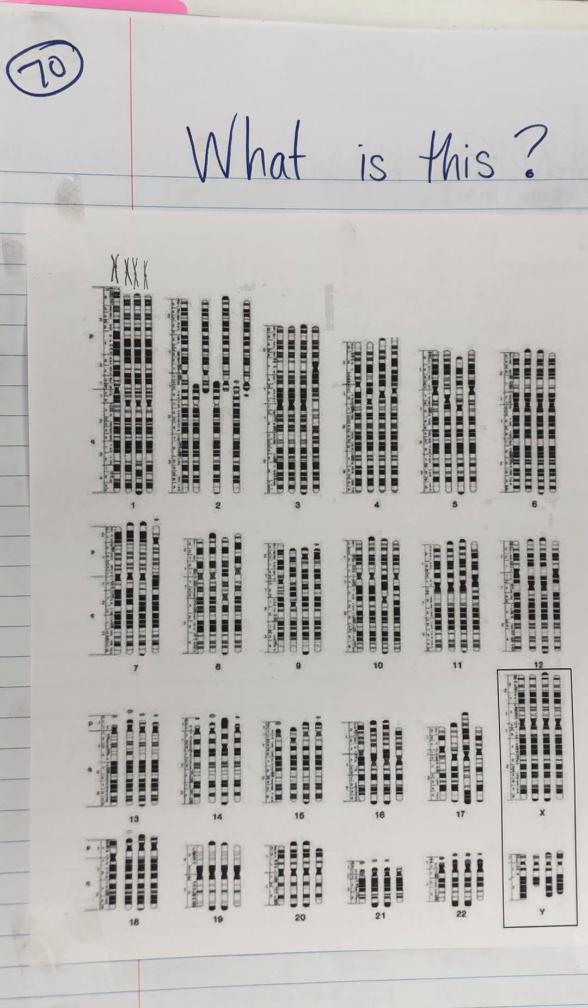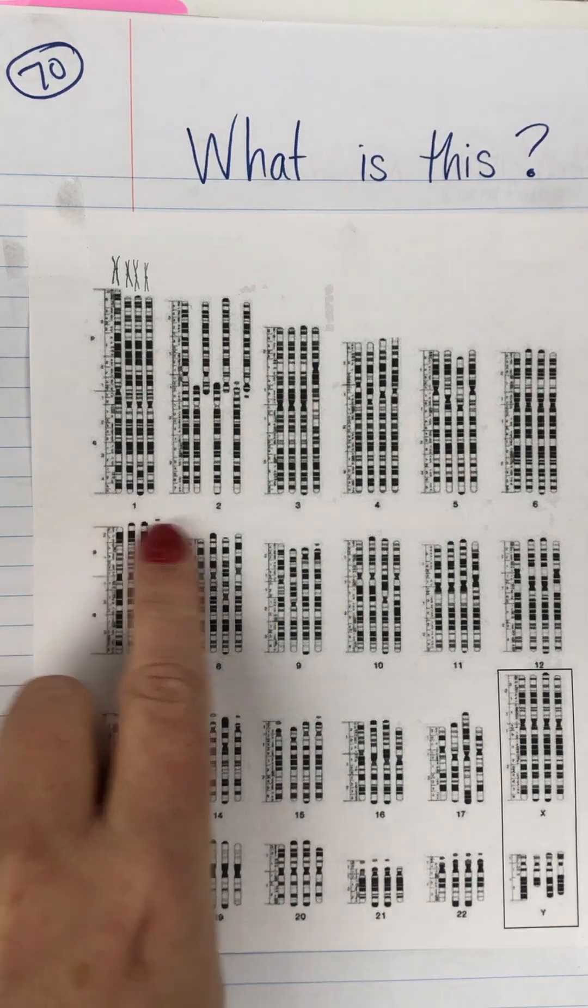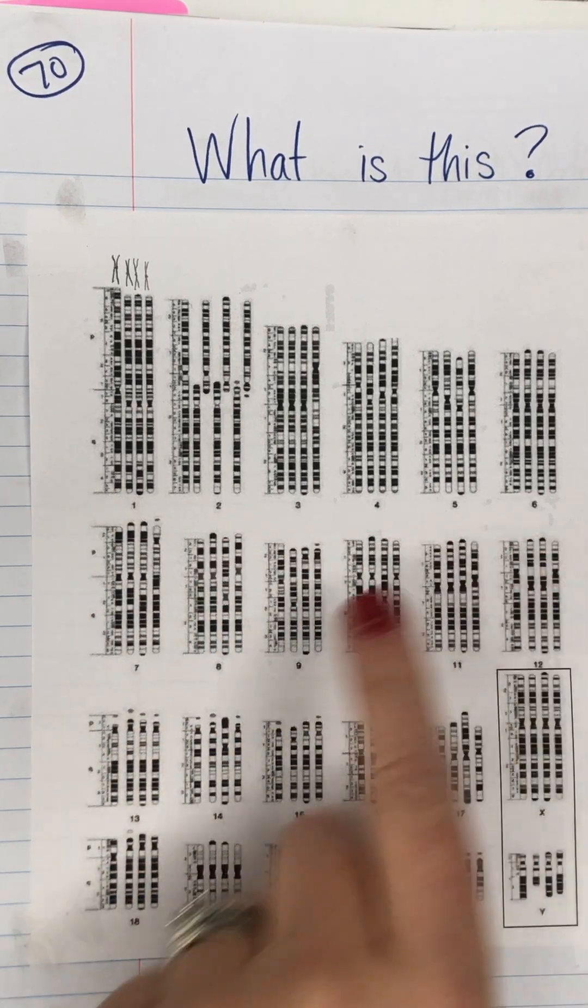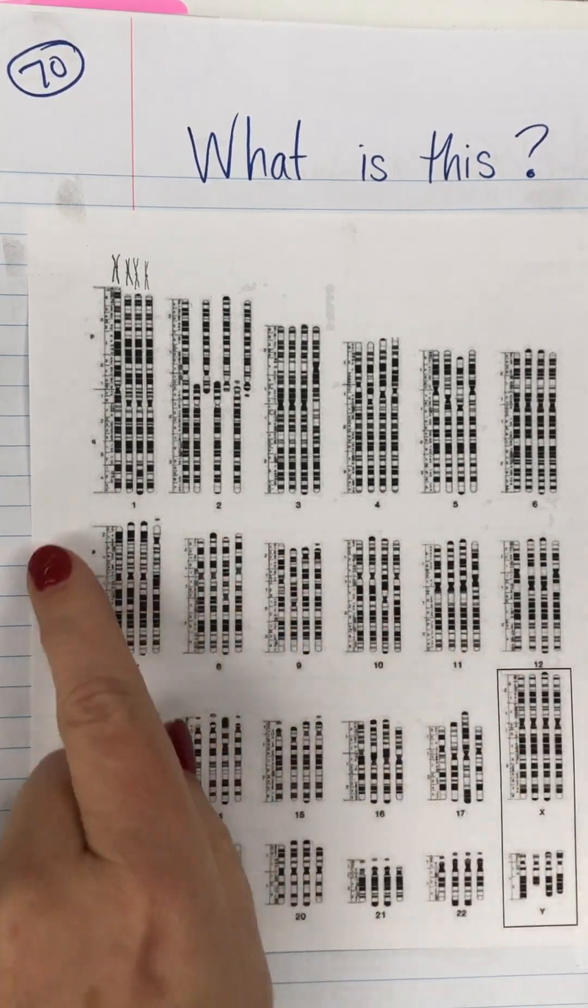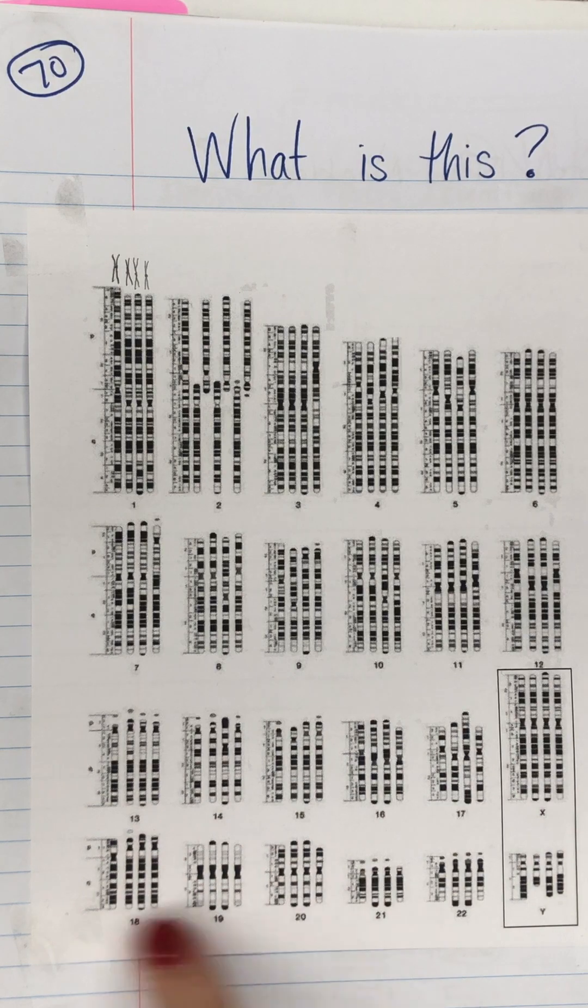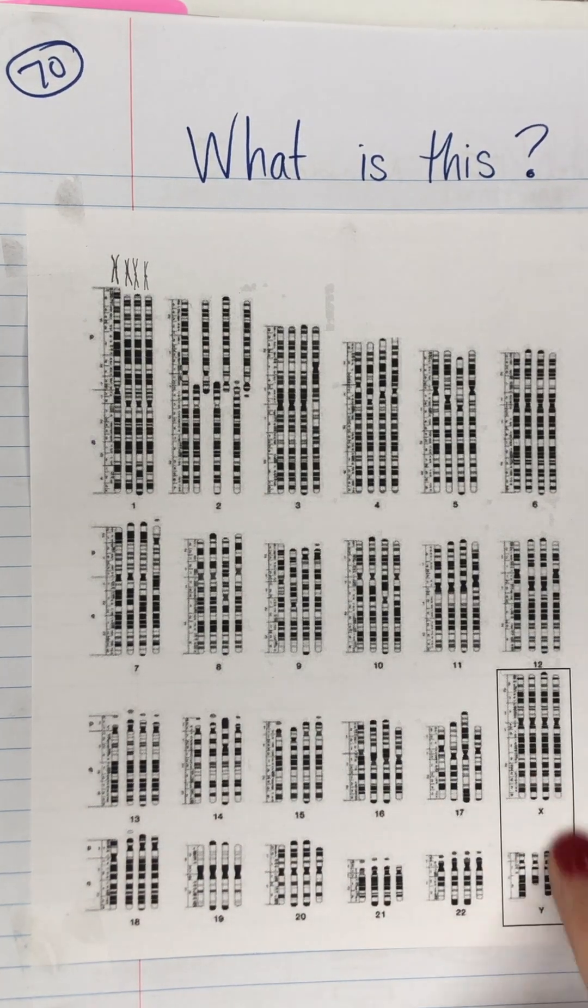In class I asked students to tell me what they thought we were looking at and they started noticing the numbers which they were very familiar with. It goes all the way up to 22 plus there's an X and a Y.